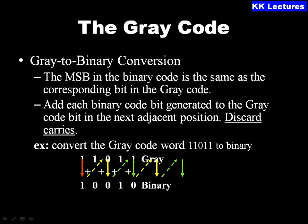Gray to binary conversion is the reverse process. The MSB in the binary code is the same as the corresponding bit in the Gray code. Then add each binary code bit generated to the Gray code bit in the next adjacent position, discarding the carry. For example, converting 11001 (Gray) to binary: keep 1 as-is, 1+1=0, 0+0=0, 0+1=1, 1+1=0, giving the binary result.